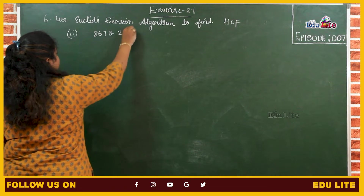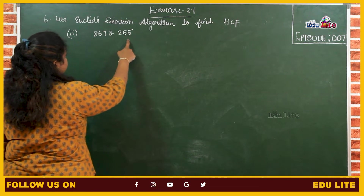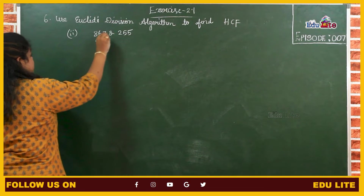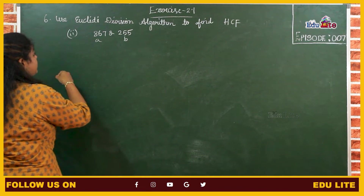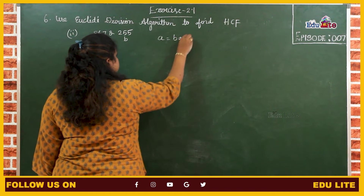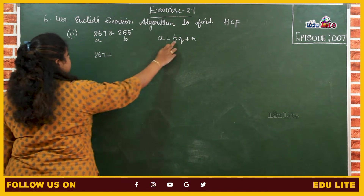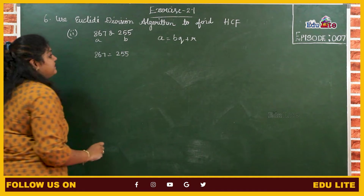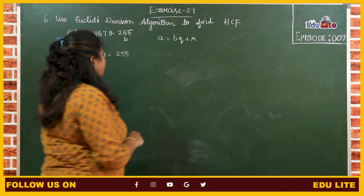In the second subdivision, we have to find the HCF of 867 and 255. Among these two, 867 is the largest number — this is the value of A, and 255 is the value of B. Therefore in Euclid's division lemma, A equals to BQ plus R. A value is 867, which is equal to B value 255. We have to find the values of Q and R and proceed with Euclid's division algorithm.